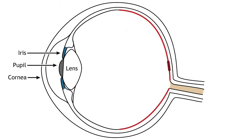The lens is located behind the pupil and the iris. The lens refracts light to focus images on the retina. Proper focusing requires the lens to stretch or relax, a process called accommodation.